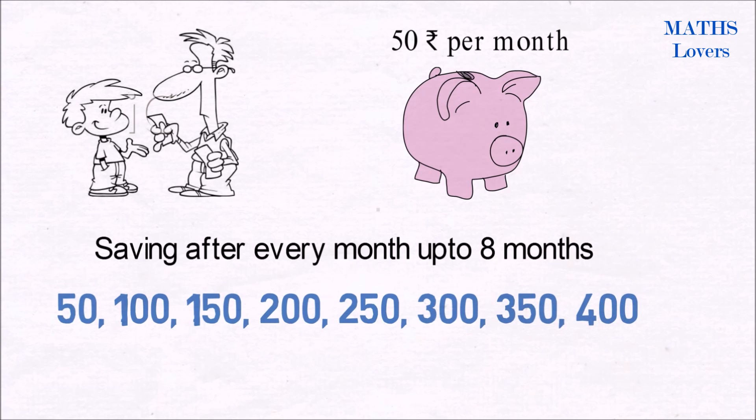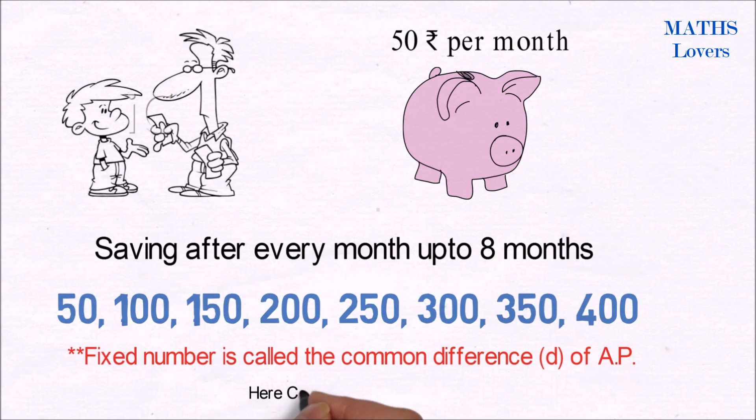As we got this series by adding a fixed number 50 to the preceding term, this is an arithmetic progression. The fixed number is known as common difference of AP. Here common difference d equals 50.